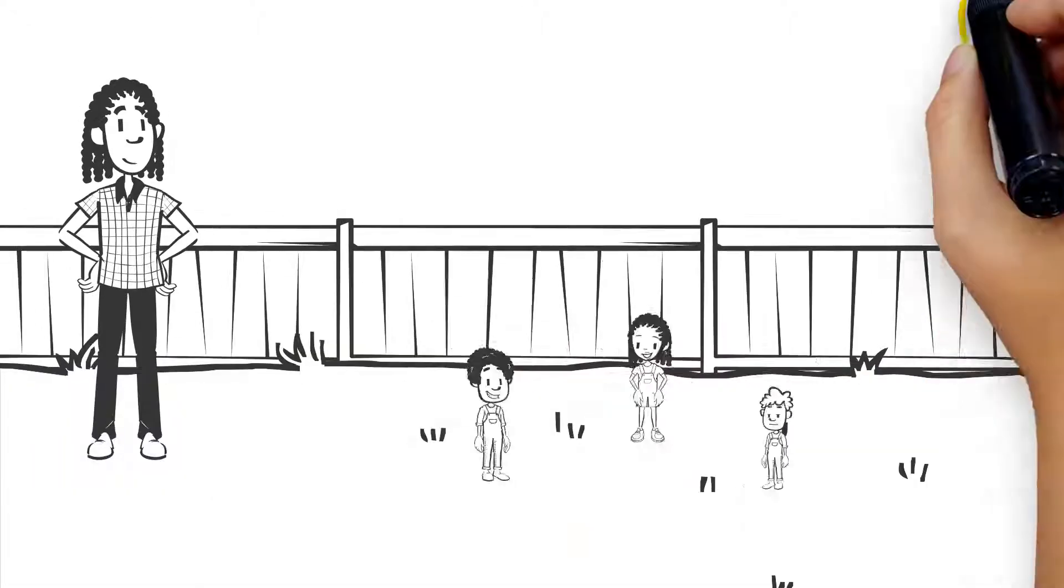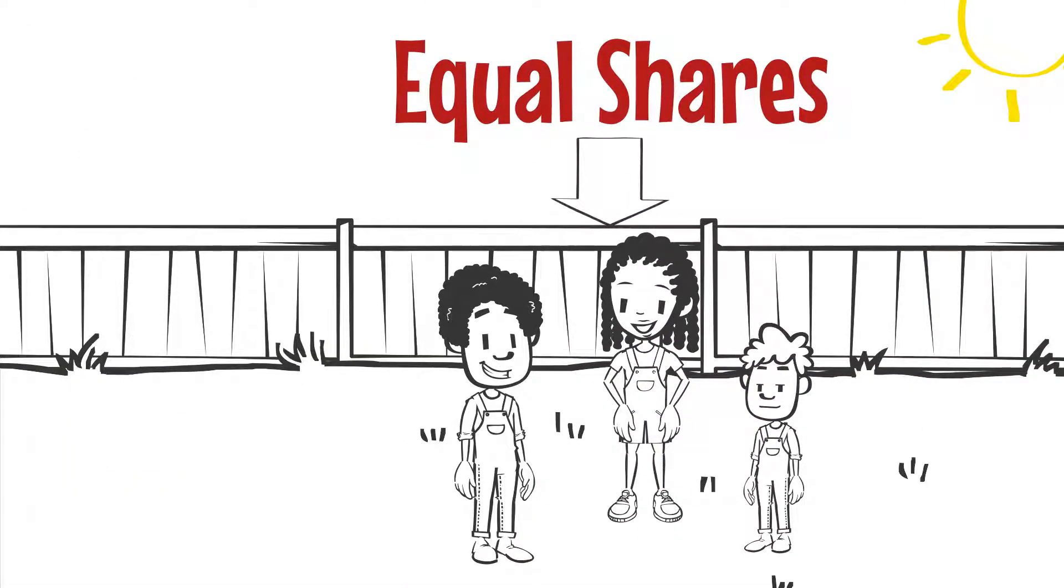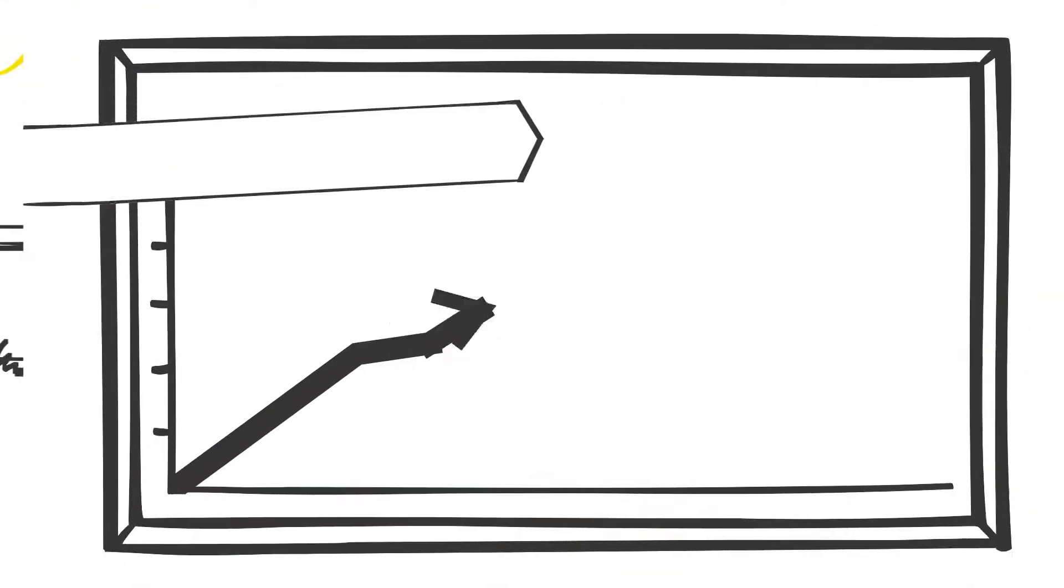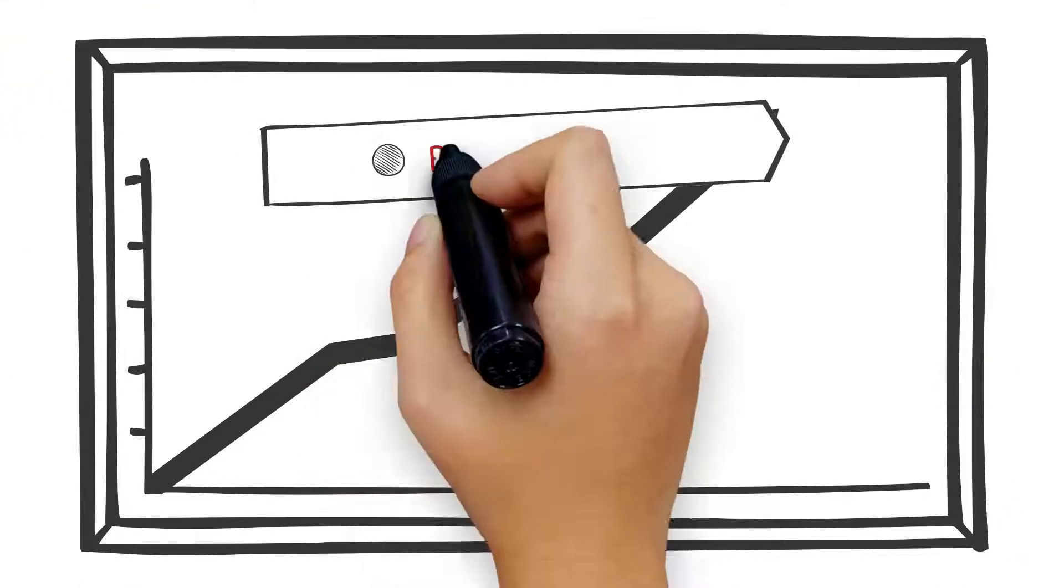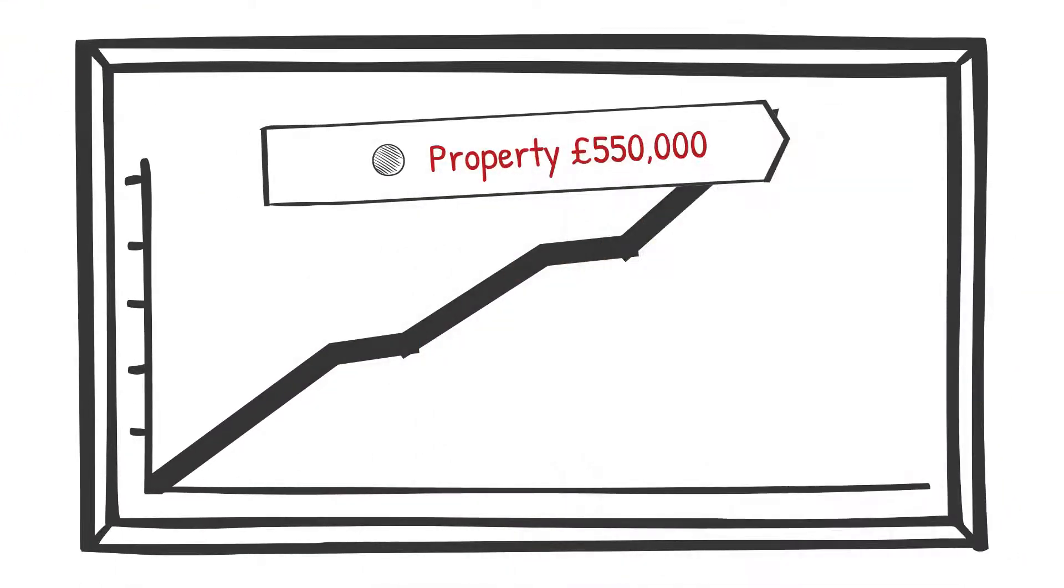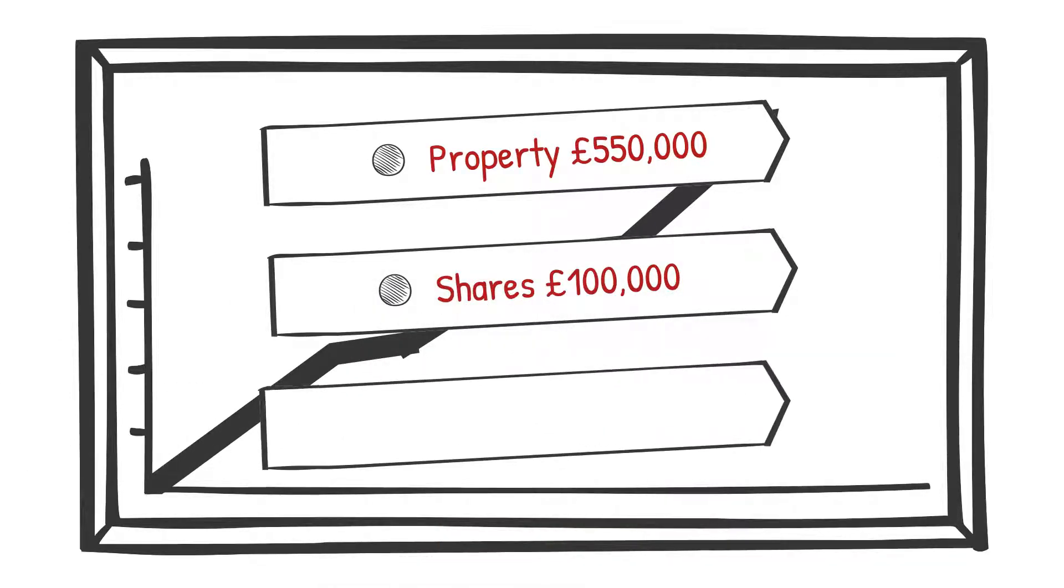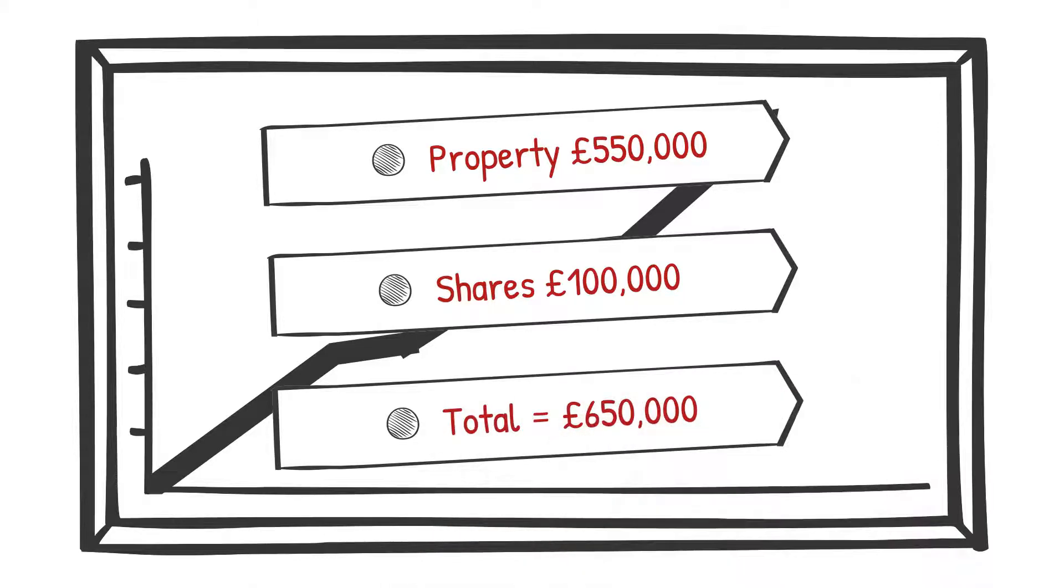Tim, Annie and Mark inherit part of Alan's estate in equal shares. Alan's estate was made up of a property held in his name only, valued at £550,000, as well as shares valued at £100,000, making his total estate £650,000.